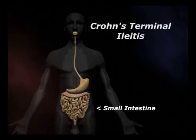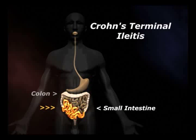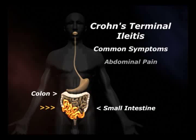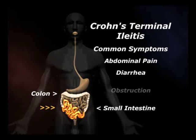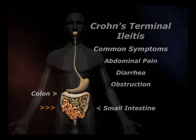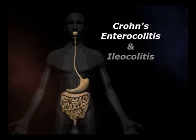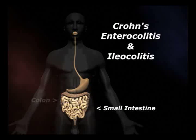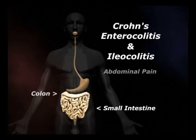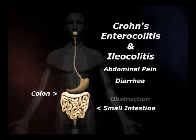Crohn's terminal iliitis is an inflammation that affects only the very end of the small intestine, closest to the colon. As with Crohn's enteritis, common symptoms are abdominal pain and diarrhea, but obstruction of the small intestine can also occur. Crohn's enterocolitis and iliocolitis are terms used to describe when inflammation affects both the small intestine and the colon, with abdominal pain and diarrhea as common symptoms.